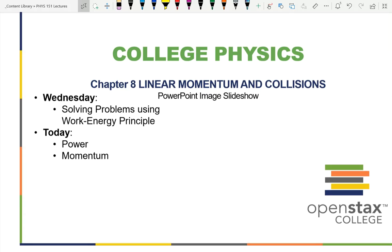Last class period we did solving work energy problems. Your homework was work energy problems. You draw your diagram, identify if there is a non-conservative force. If there is, calculate the work non-conservative. Determine what the initial potential energy and the initial kinetic energy is, remembering that you have to set your reference point for potential energy.